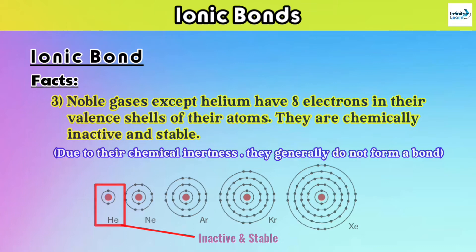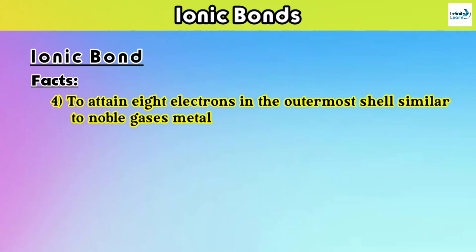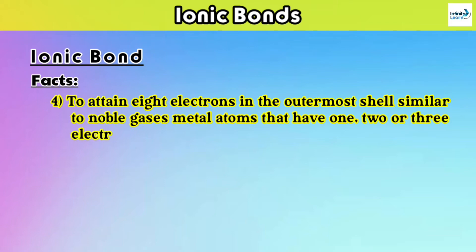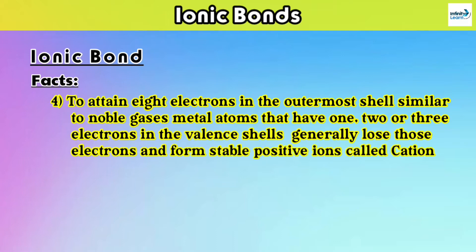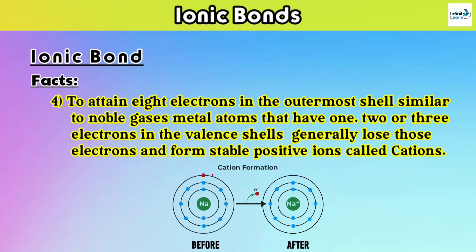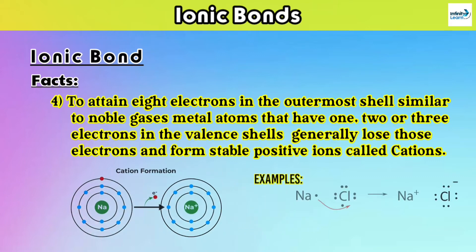Fact number four: to attain eight electrons in the outermost shell, similar to noble gases, metal atoms that have one, two, or three electrons in the valence shell generally lose electrons and form a stable positive ion called a cation. These metal atoms lose their outermost shell electrons to become stable, and here are some simple examples you can see to understand this more clearly.